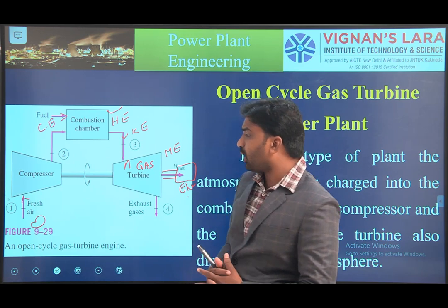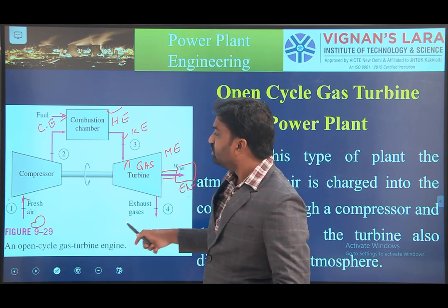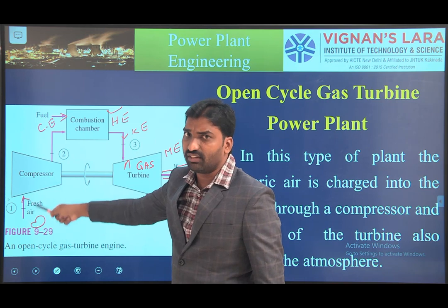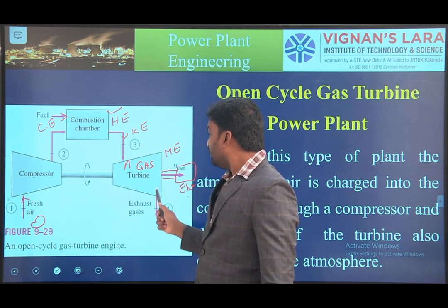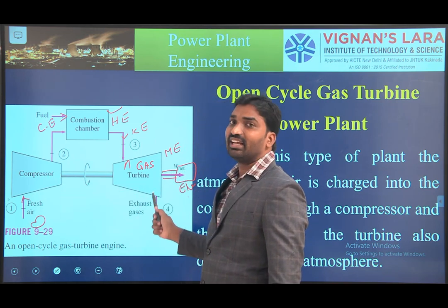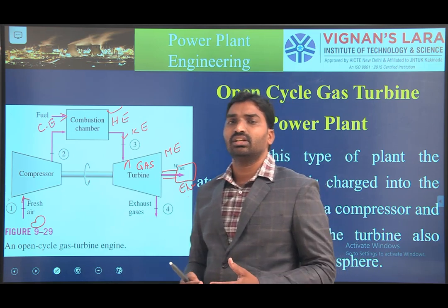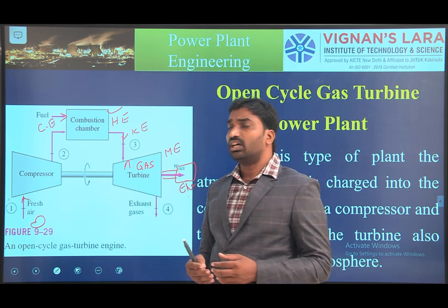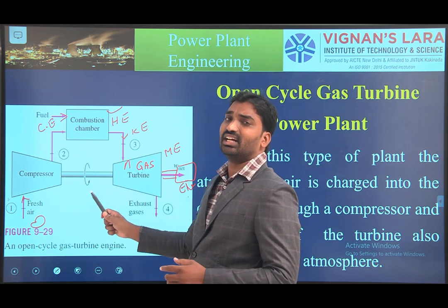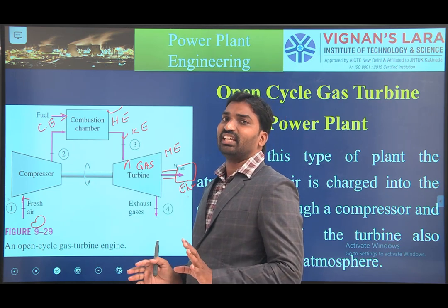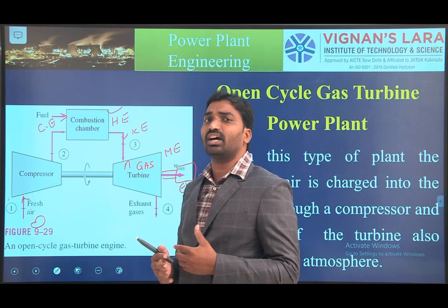The problem in this entire cycle is that we continuously take air from the ambient conditions and release the exhaust gas back to the ambient conditions. We do not recirculate the exhaust air. That is the reason this type of cycle is known as the open cycle gas turbine power plant.